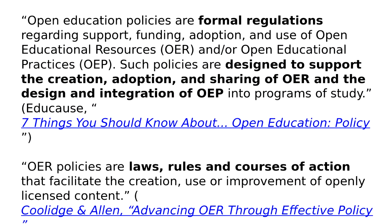These definitions are a bit different and both have their own strengths. I like in the EDUCAUSE definition that they talk about how policy may be addressing OEP (open educational practices) as well as OER specifically. The Coolidge and Alan definition is more focused on openly licensed content, but what's really interesting is that they highlight it is not only laws or rules but also courses of action — in other words, simply the way that we do things can also be understood as policy, even if it's not written down anywhere.